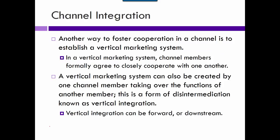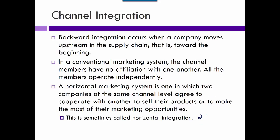Channel integration: there are ways to get people to cooperate within the channel so that it turns into a win-win. Vertical integration is when different members up and down the channel integrate — for example, a manufacturer buys out a supplier. Horizontal integration is when two manufacturers of the same thing integrate, or two shipping companies, or two suppliers. These types of integration reduce competition, so mergers have to be approved by the FTC.